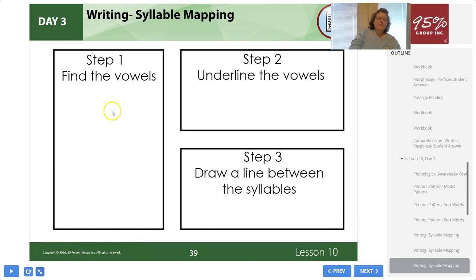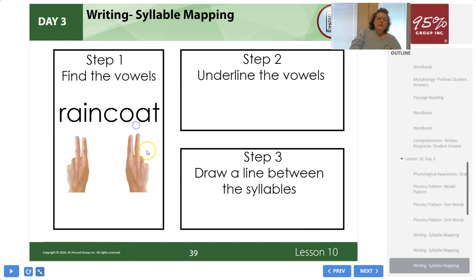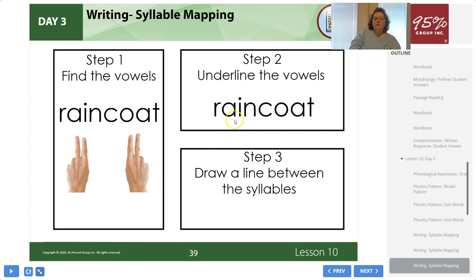Let's try the next word together: raincoat. Use both hands to find the vowels in each syllable. Two fingers are underneath the AI with the left hand and beneath the OA with the right hand. Step two — underline the vowels. We underline A and I, and O and A. Over here it shows you the syllable type gesture underneath the vowels — you're underlining exactly where you were doing the vowel gesture.